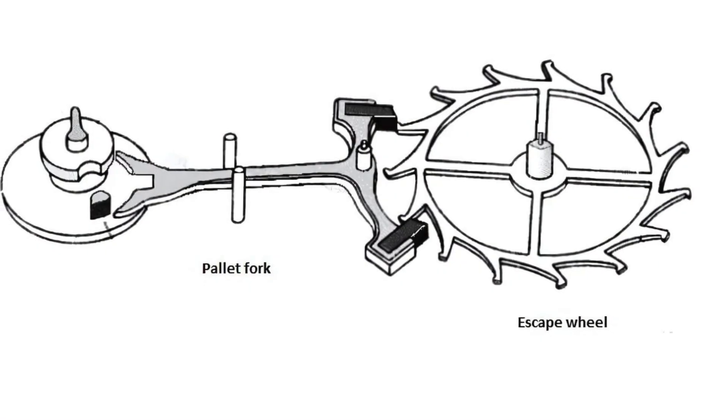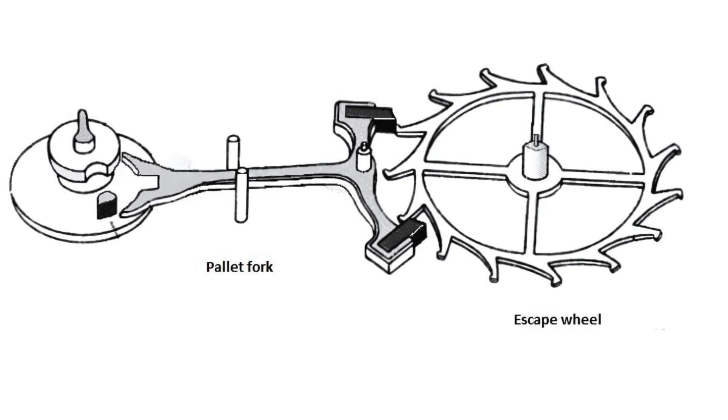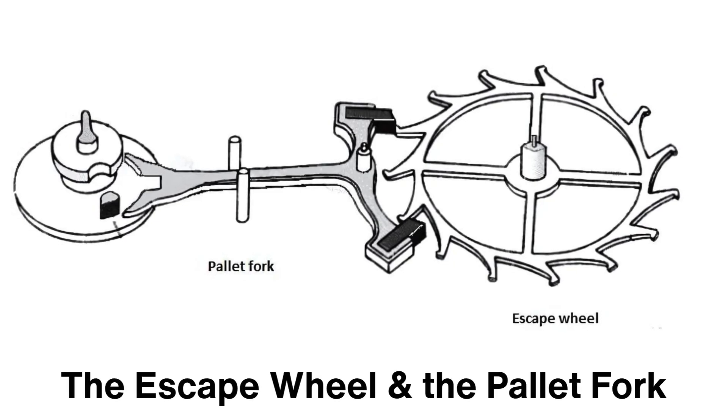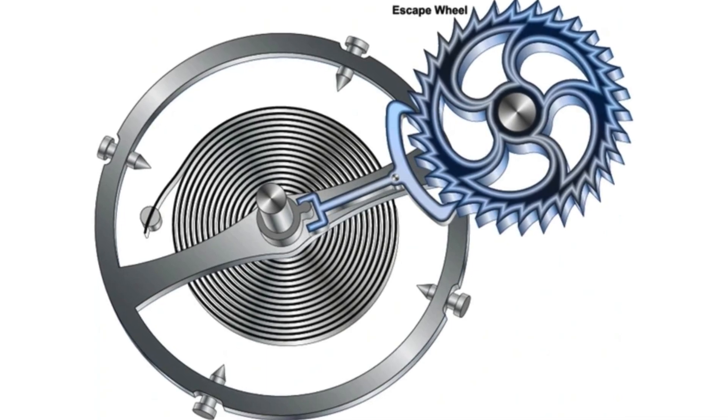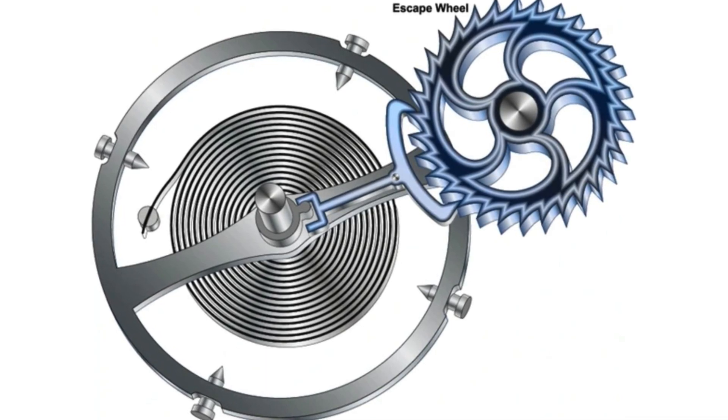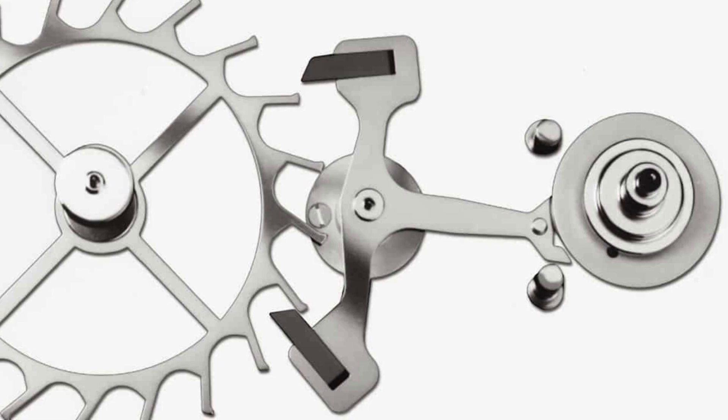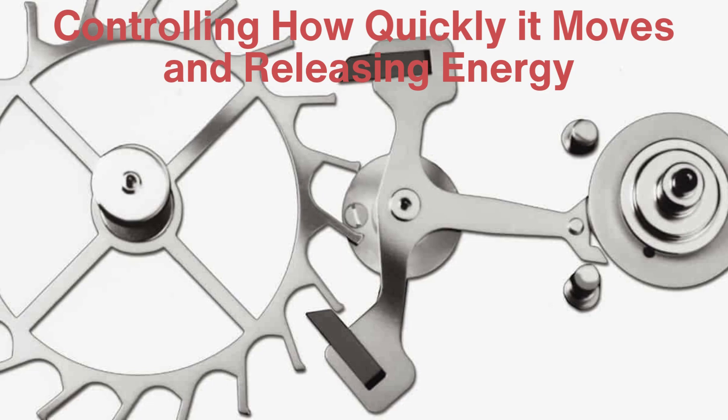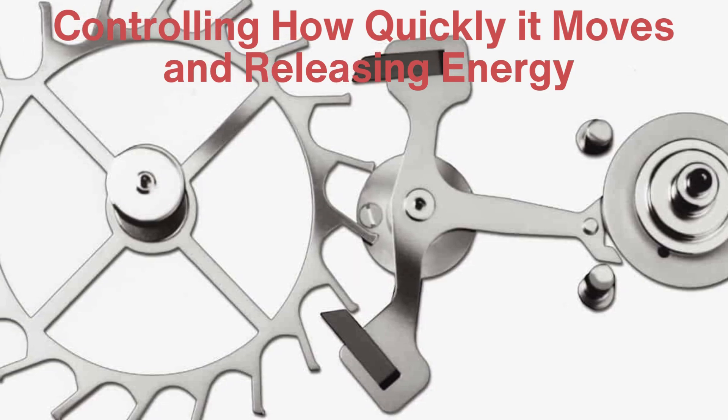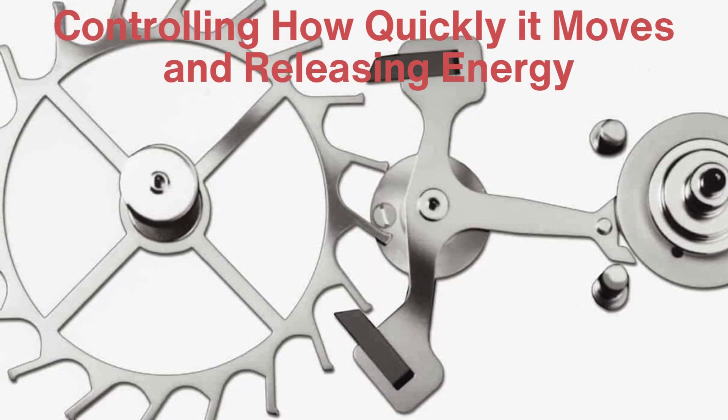The escapement consists of two primary components, the escape wheel and the pallet fork. The escape wheel is part of the gear train, which transfers the energy from the mainspring to the hands of the watch. The pallet fork interacts with the escape wheel, controlling how quickly it moves and releasing energy in carefully timed bursts. As the escape wheel advances, the pallet fork rocks back and forth, creating the familiar ticking sound.